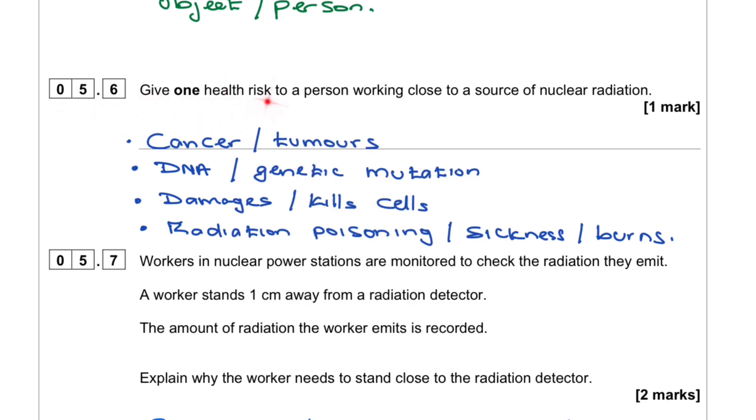Question 5.6. Give one health risk to a person working close to a source of nuclear radiation. Cancer or tumor. DNA. Genetic mutation. Damages or kills cells. Radiation poisoning. Sickness or burns.